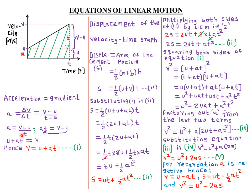Multiplying both sides by t, the t on the right cancels, leaving v minus u = at. Taking u to the left-hand side, it becomes positive, giving us u + at = v. Rewriting, v = u + at, where v is the final velocity, u the initial velocity, a the acceleration, and t the time. This is our first equation of linear motion.